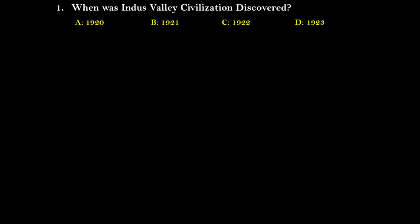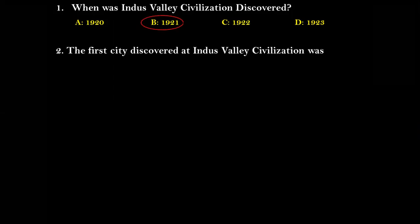Question number one: When was the Indus Valley Civilization discovered? Options are 1920, 1921, 1922, and 1923. The right answer for this question is 1921.